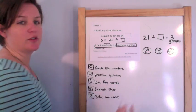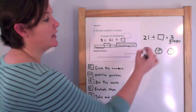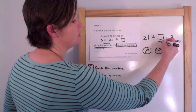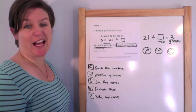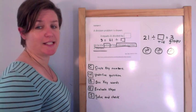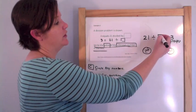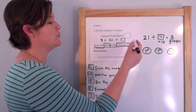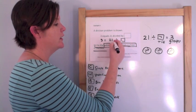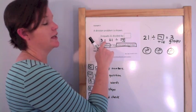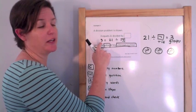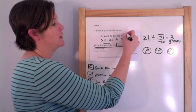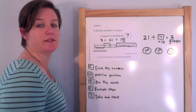So counting out 21 items across 3 groups: how many things are in each group? There are 7 things in each. So 21 divided by 7 equals 3, meaning 3 equals 21 divided by 7.